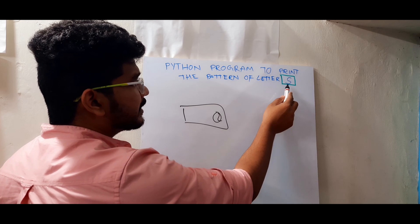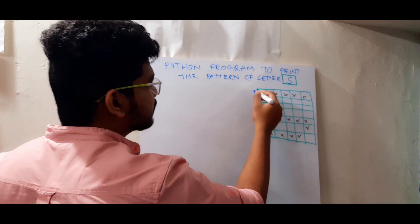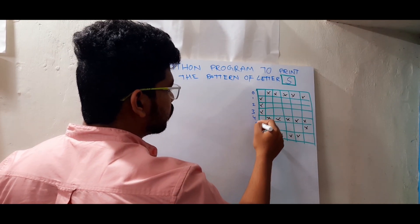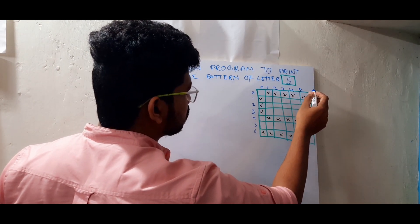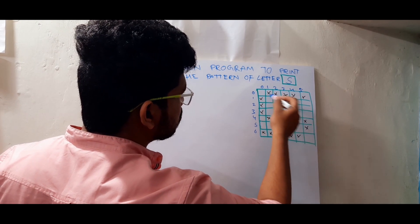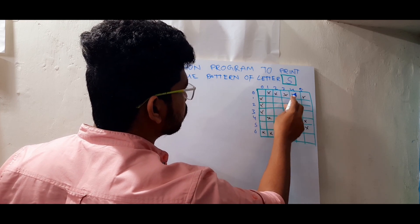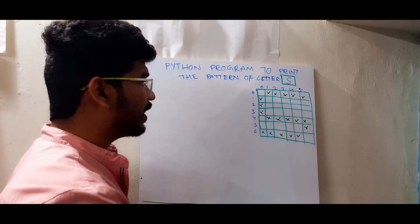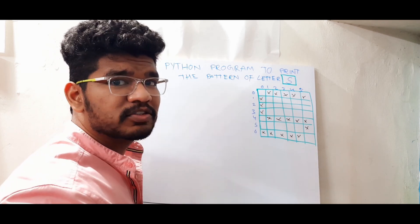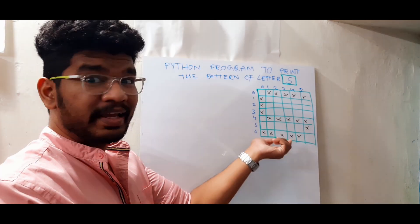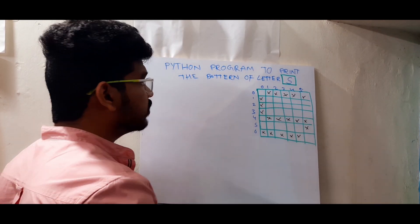Let's discuss letter S. This is the pattern of letter S I am going to print. Let us give the sizes here: 0, 1, 2, 3, 4, 5, and 6 — it's a 6 by 6 matrix. When I execute the program and take size 6, it will automatically form into a 6 by 6 matrix. I missed one column on the drawing, but that's fine.